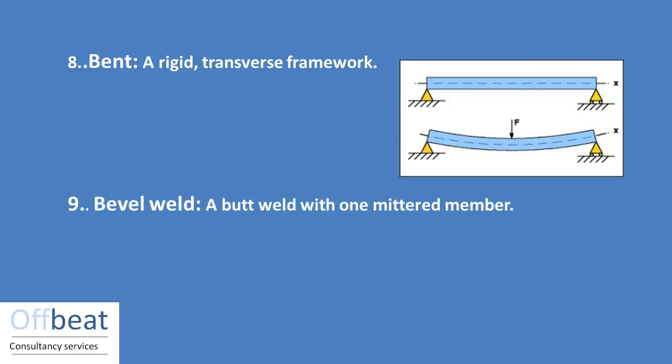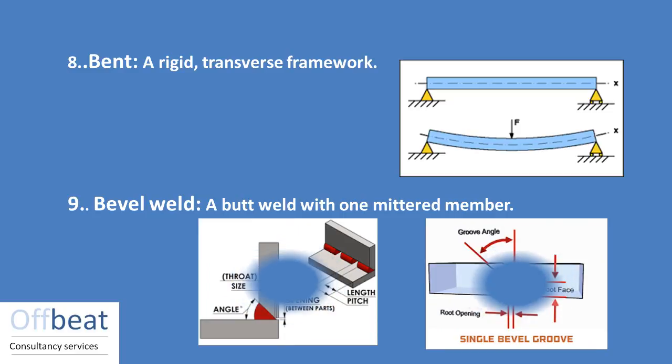Butt weld: a weld with one member elongated or mitered is known as a butt weld, as seen in this picture.